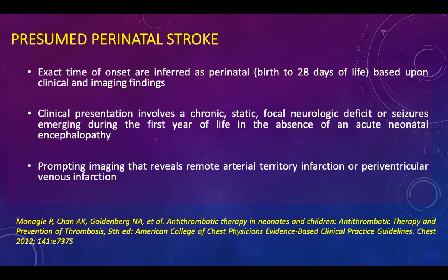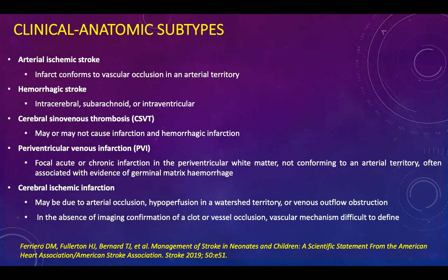On the other hand, there is an entity not revealed in the neonatal period known as presumably perinatal stroke, where the exact time of onset is inferred as perinatal from birth to 28 days of life based on clinical and imaging findings. The clinical presentation is a chronic static focal neurological deficit or seizures emerging during the first year of life in the absence of acute encephalopathy. Imaging reveals remote arterial or periventricular venous infarction. Clinical anatomic subtypes include arterial ischemic stroke, where the infarct conforms to the vascular distribution in the arterial territory.